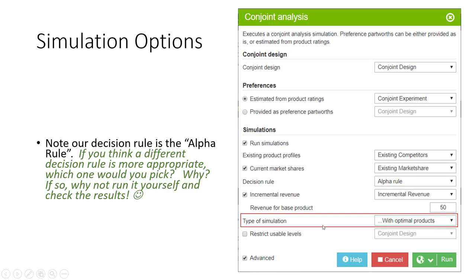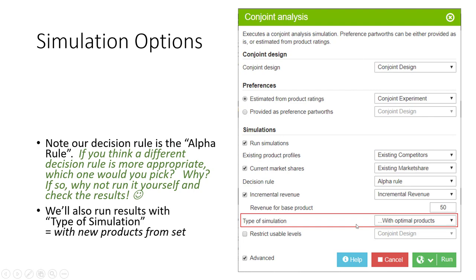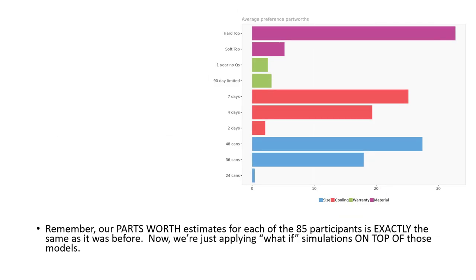The first type of simulation we're going to run is based on optimal product design — we're going to look at all 36 potential combinations of cooler design. When we run the simulation, the parts worth estimates we saw earlier have not changed. We're simply taking those results and incorporating additional information about the marketplace to derive simulation estimates.